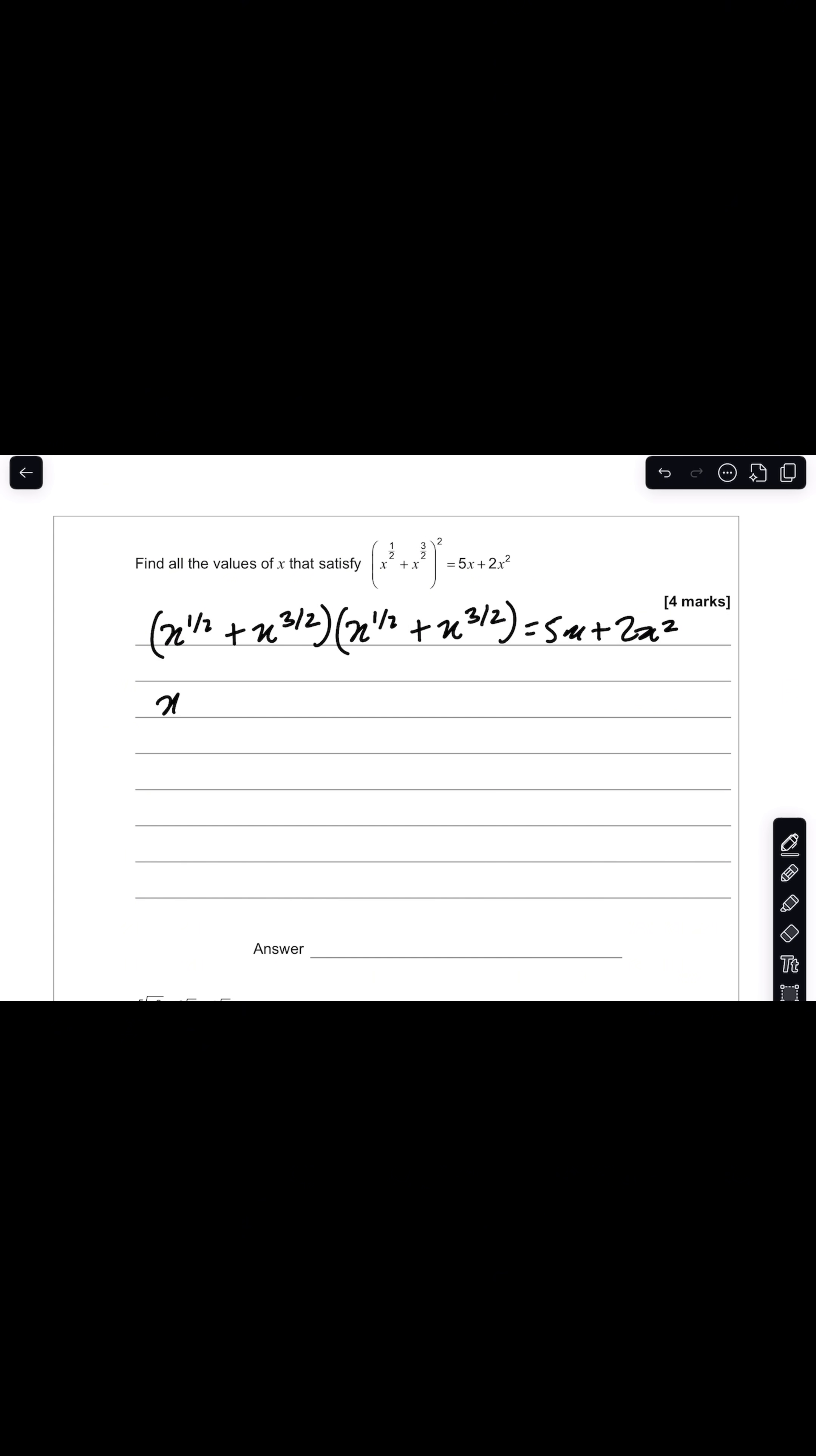So when you expand your brackets on the left hand side, you're left with x plus x squared plus x squared plus x cubed, and that equals 5x plus 2x squared.